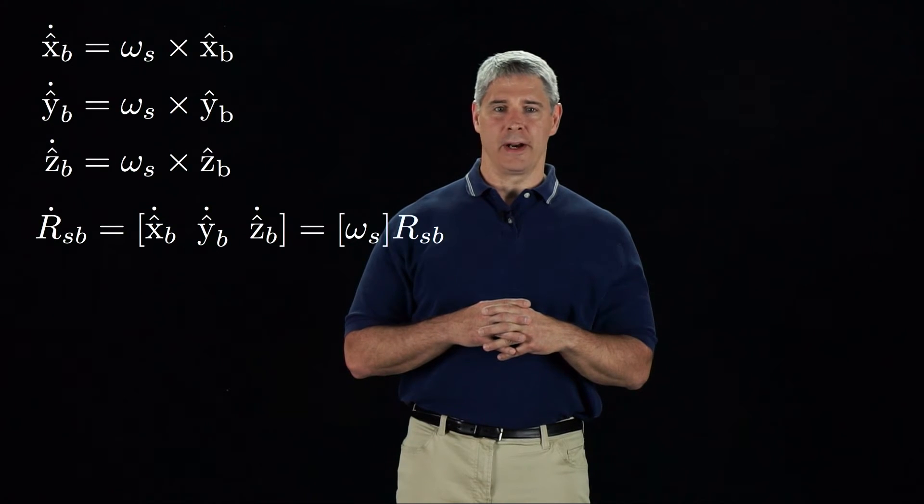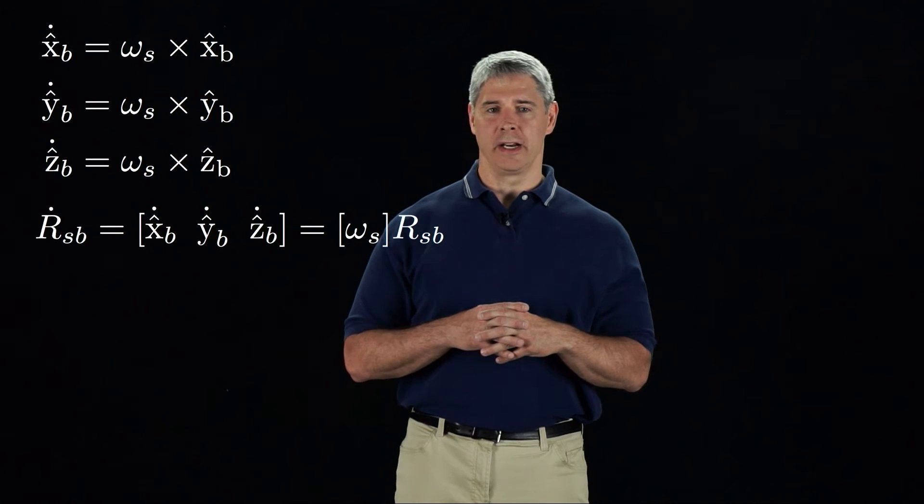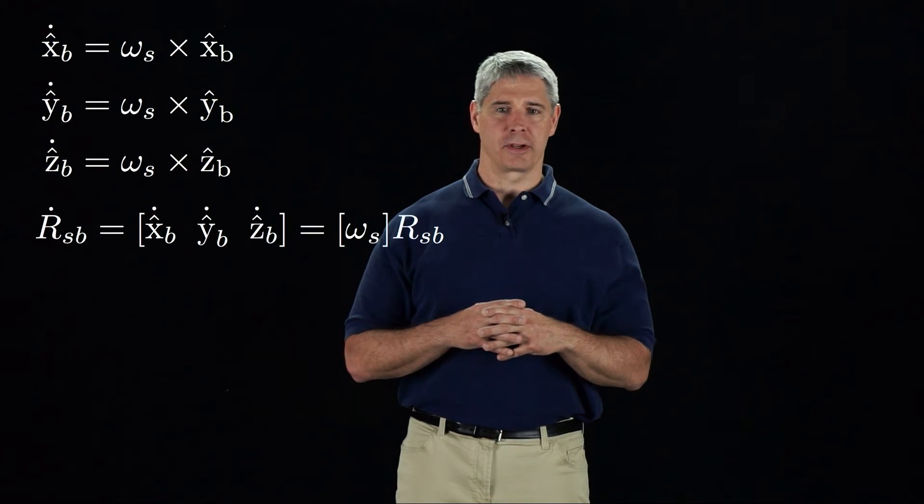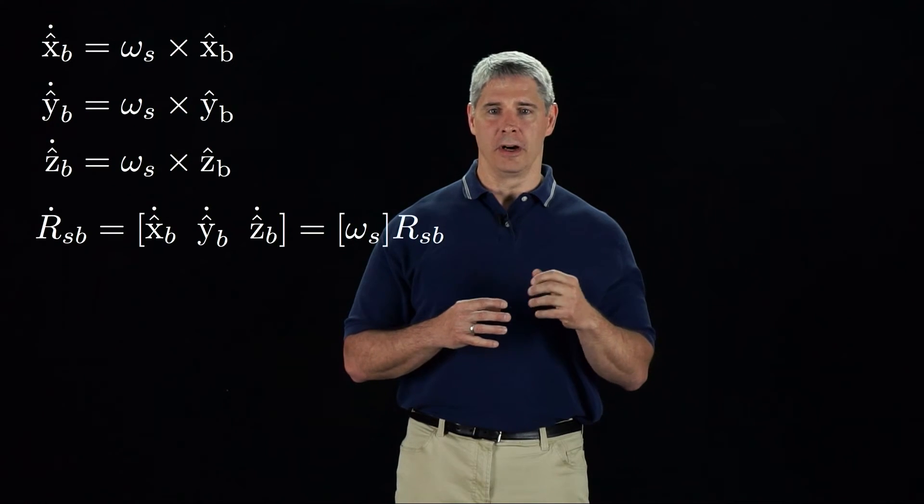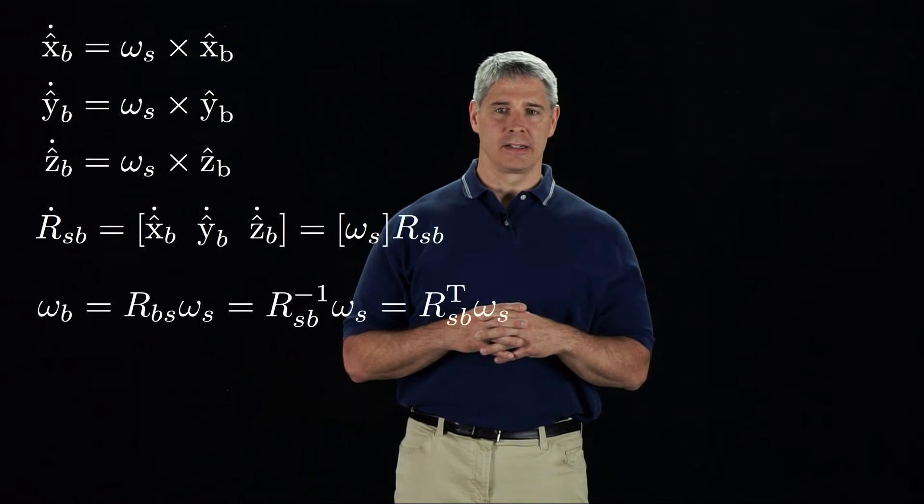The angular velocity vector can be expressed in other frames, not just the S frame. For example, we could write it in the B frame coordinates. Using our change of reference frame subscript cancellation rule from the previous video, we get omega B equals R B S times omega S, or R S B inverse times omega S.